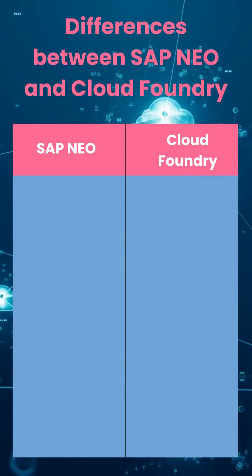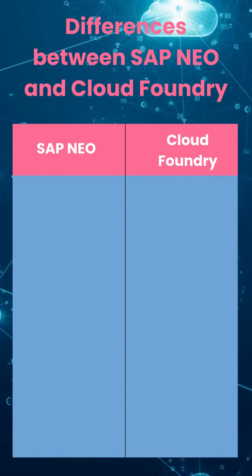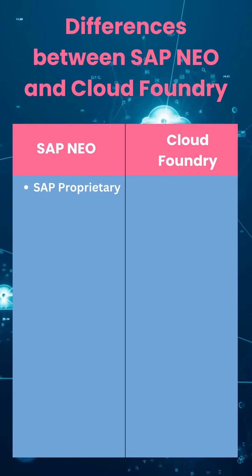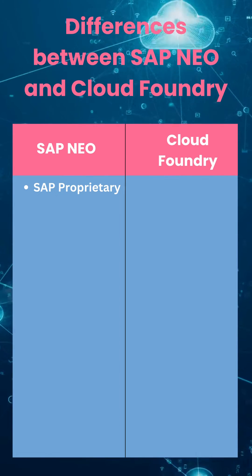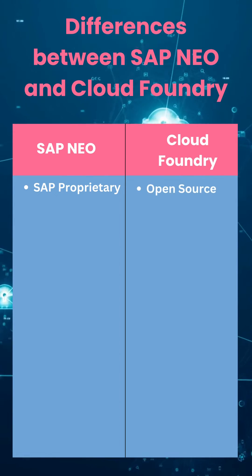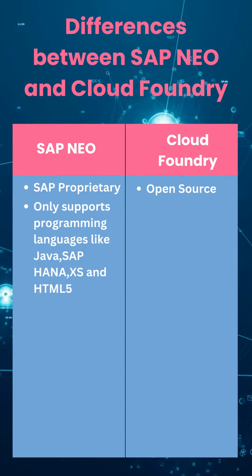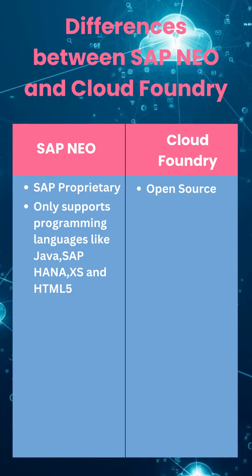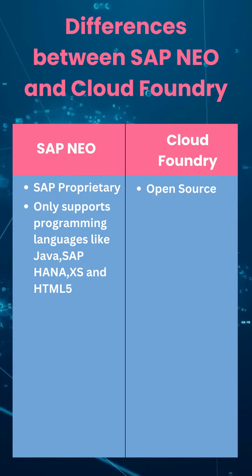Let's now look at the key differences between SAP NEO and Cloud Foundry. SAP NEO is SAP's proprietary platform, whereas Cloud Foundry is open-source. SAP NEO supports programming languages like Java, SAP HANA XS, and HTML5.